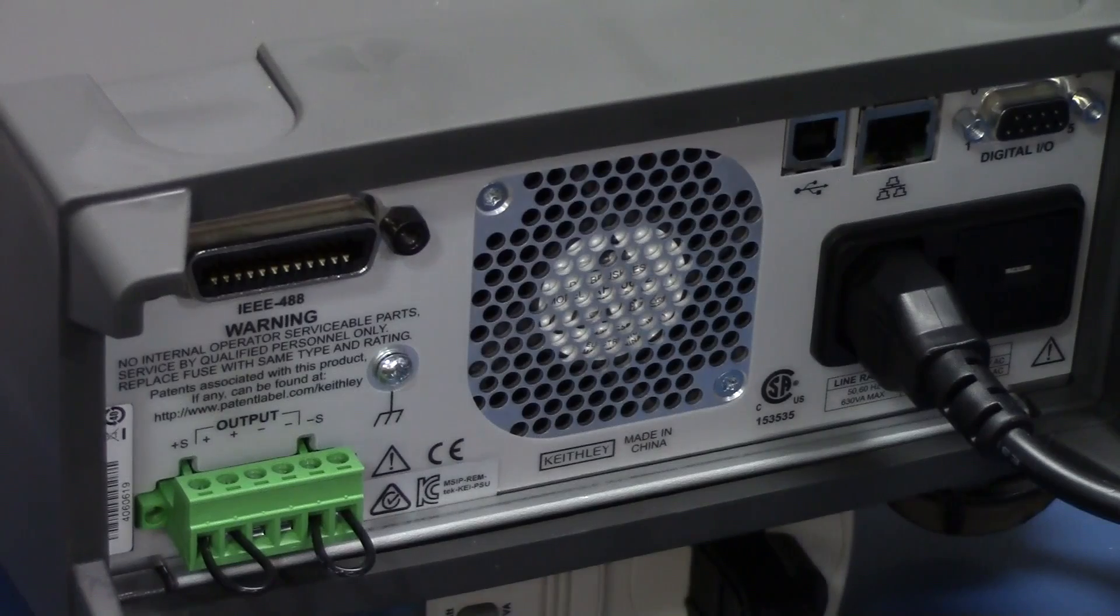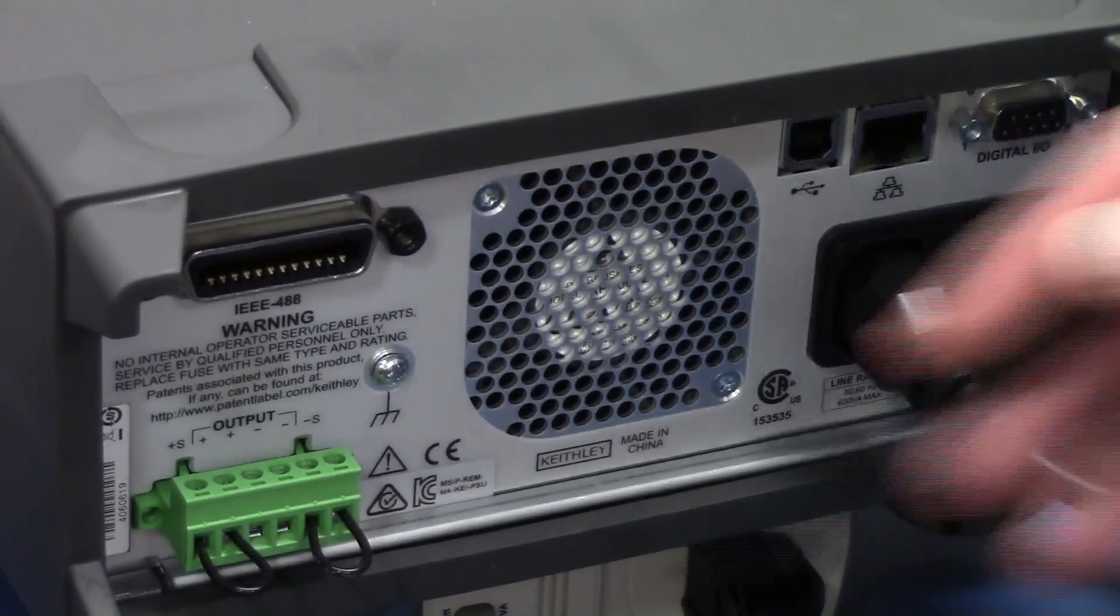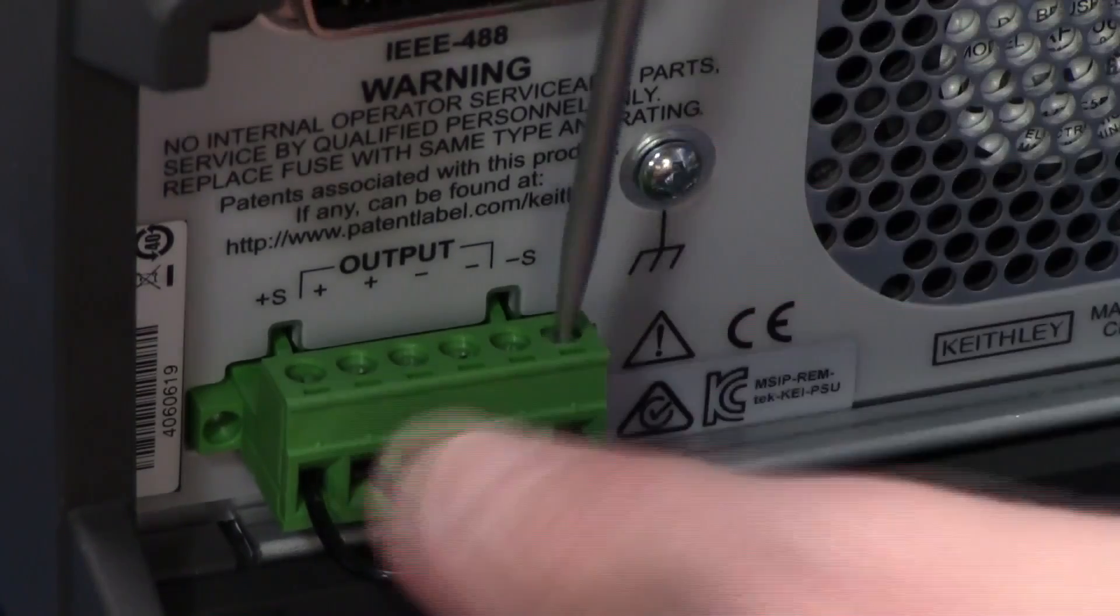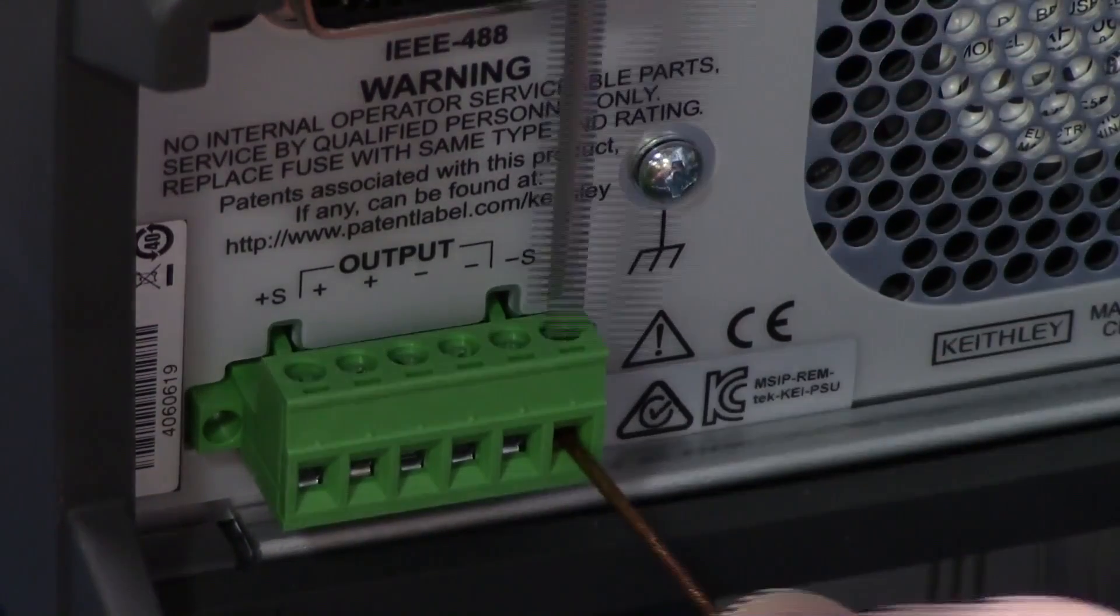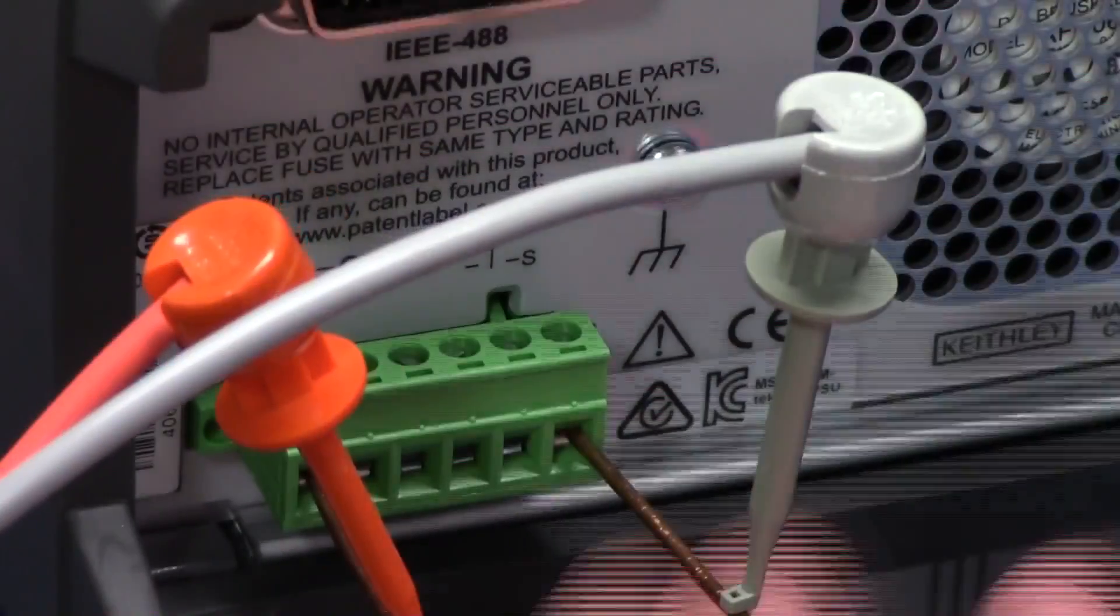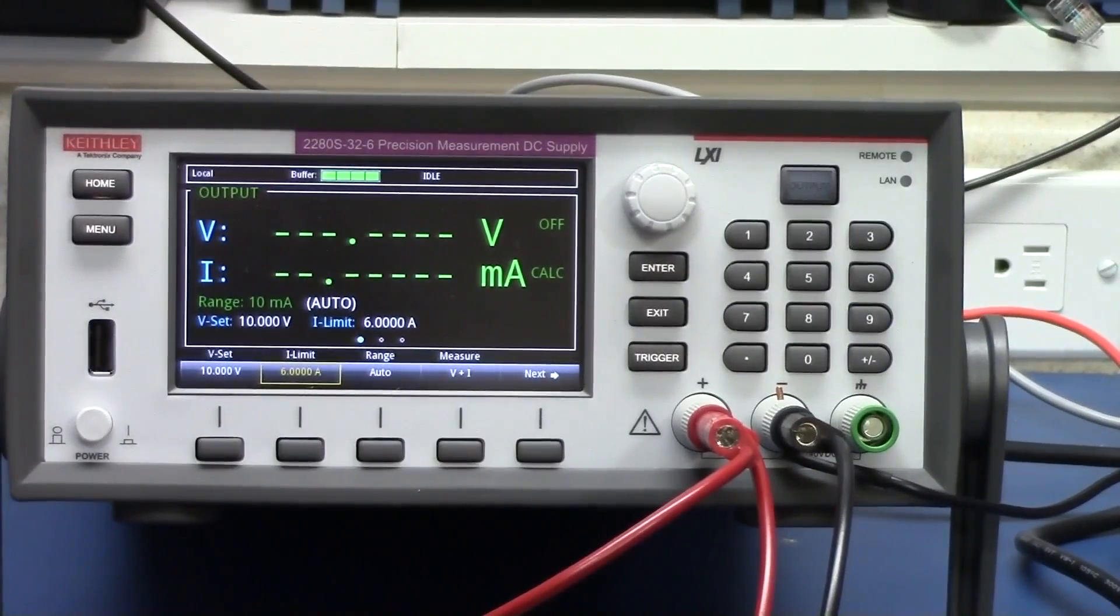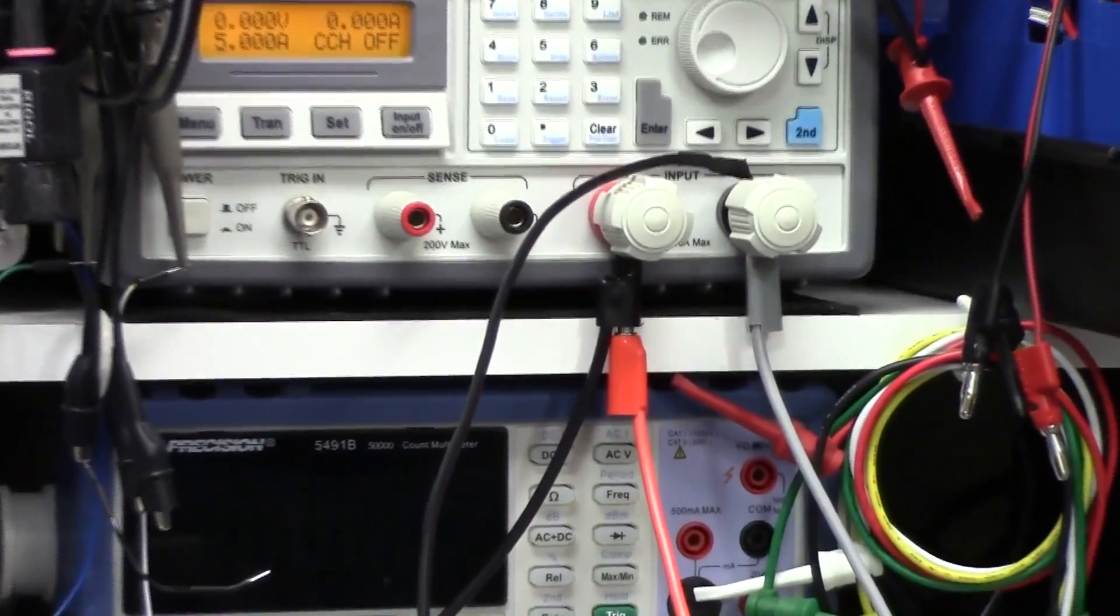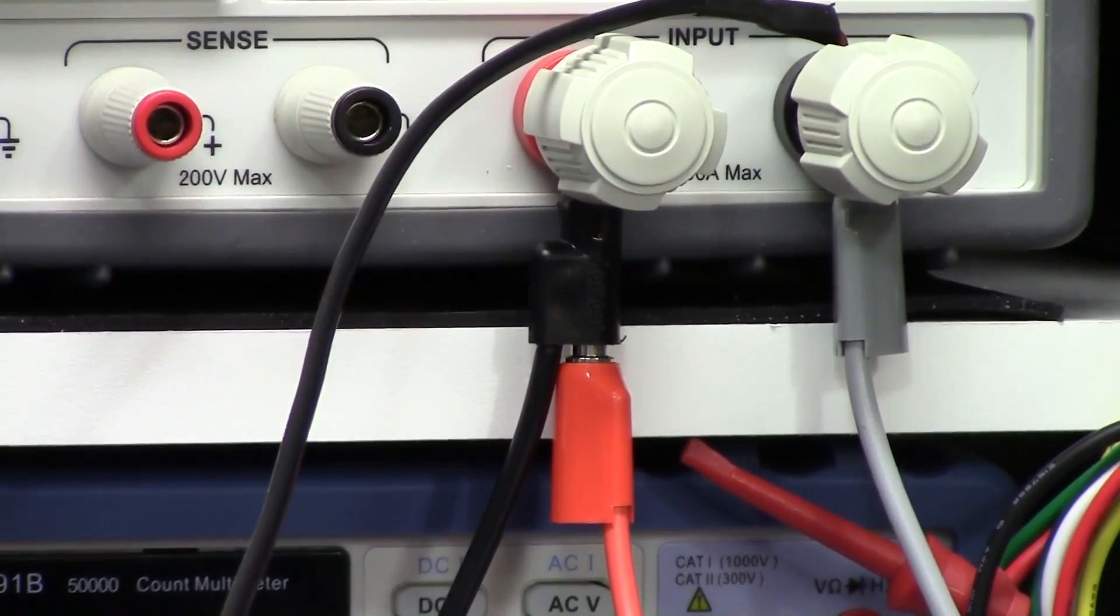So, real quick, let's swap out the jumpers on the back that were pre-installed for the remote sense and put it into remote sense mode. We're now connected up with the Agilent monitoring the output terminals of the power supply and the power supply's remote sense terminals connected up to the input of the electronic load. Let's see how this behaves.